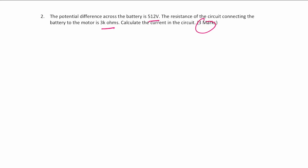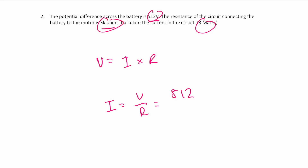The equation we're interested in here is Ohm's law: V equals I multiplied by R. In the question we're given the voltage and the resistance, so all we need to do is rearrange for the current. I would be equal to V over R — so plug in 512 volts divided by 3 kilohms, which is 3000 ohms. You should get approximately 0.1706 amps. We could give this to one significant figure, so 0.2 amps.